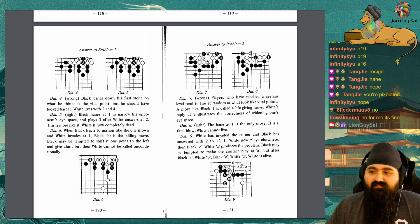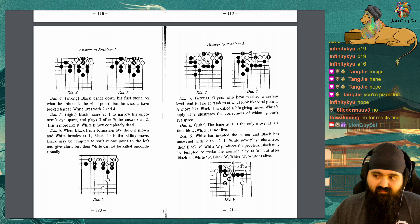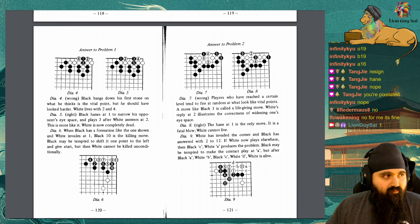Diagram 6: When Black has a formation like the one shown and White invades at 1, Black 10 is the killing move. Black may be tempted to shift it 1 point to the left and give atari, but then White cannot be killed unconditionally.